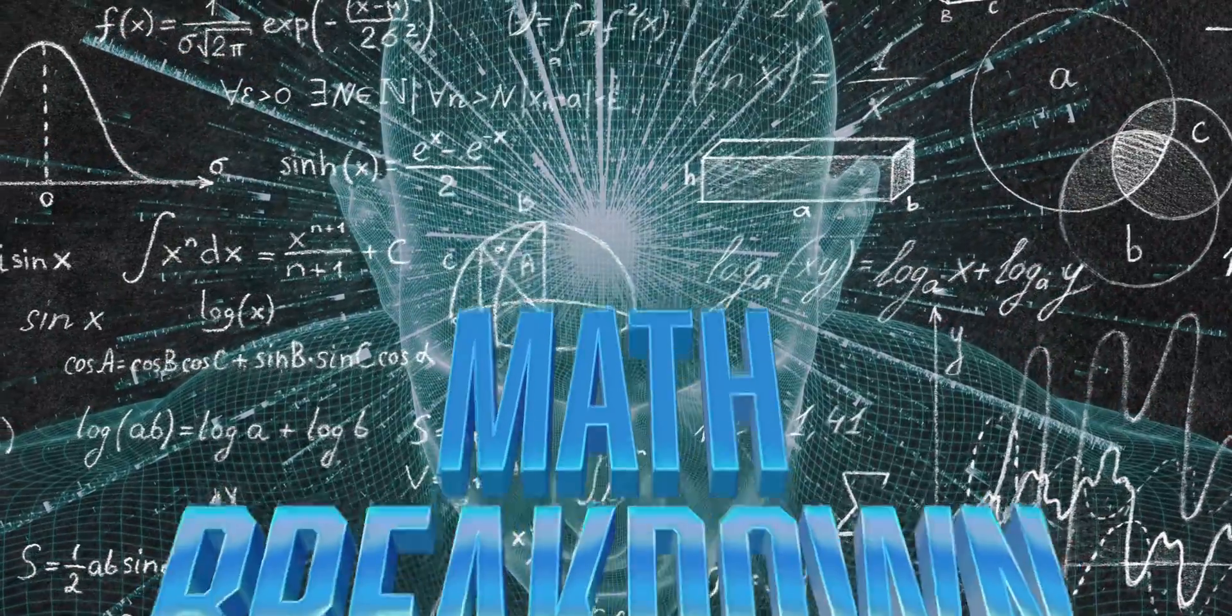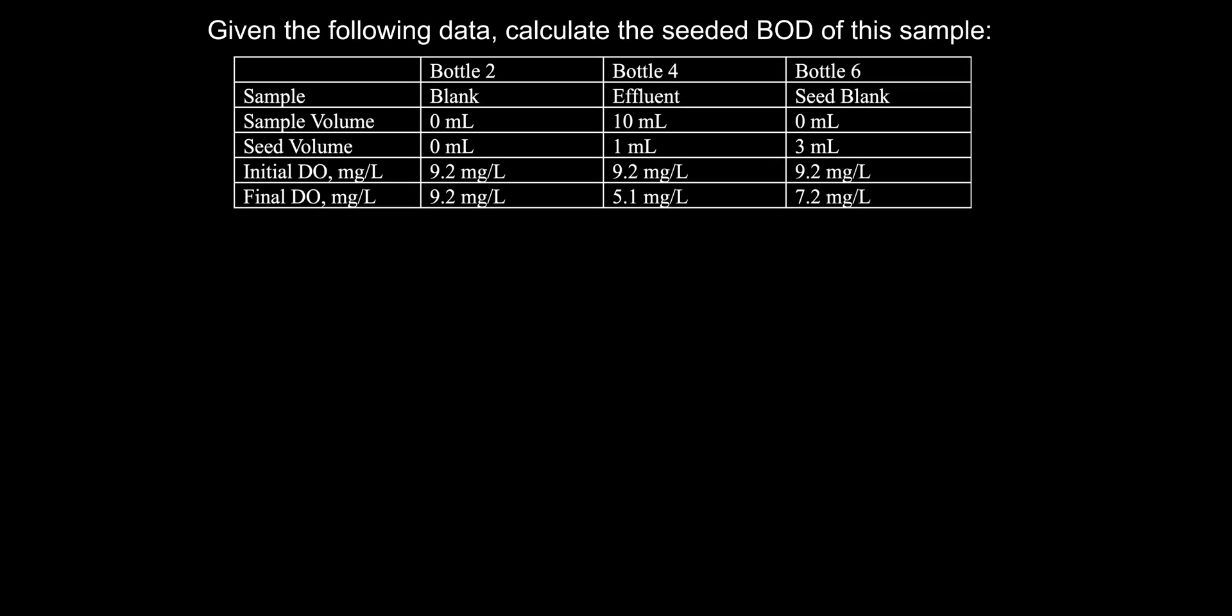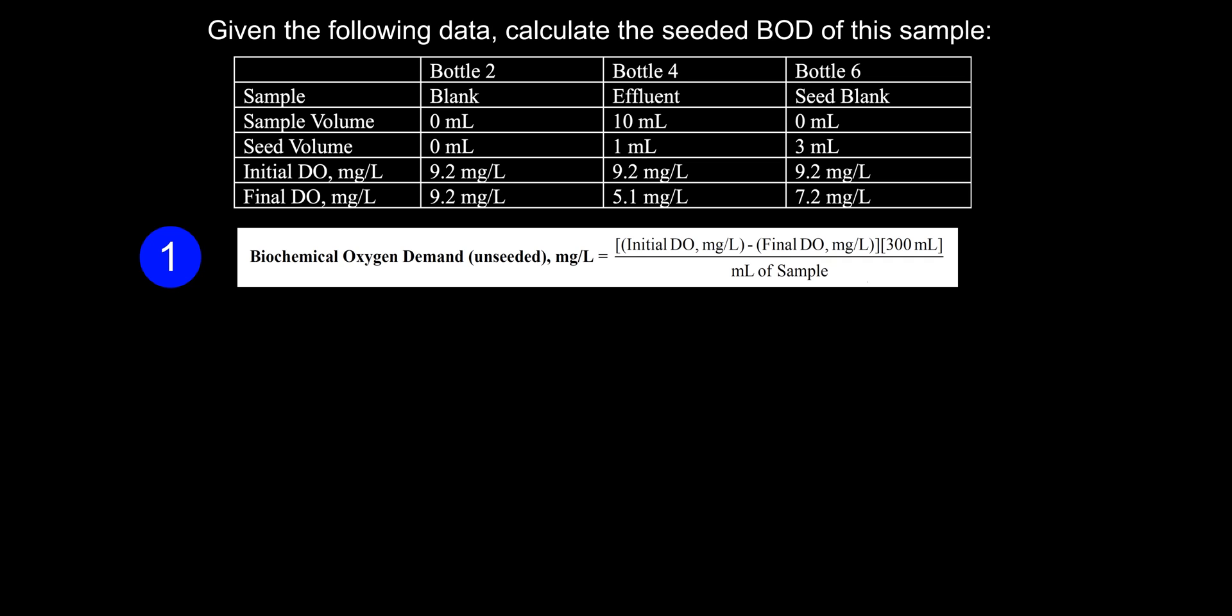Let's big brain this and break down the math. This question has three parts to it. In order to find the BOD value of the effluent sample, which contains seed, we must first find the BOD value of the seed itself. For the first part, we will be using the unseeded BOD equation, which is given to us. Now, I don't want anyone to get confused about why this formula says unseeded, but we're using it on the seed blank sample. This is because while the seed blank contains actual seed, there is no additional seed being added to it, unlike with the effluent sample. Let's plug our numbers from the chart into the equation. We first subtract the initial DO, 9.2, from the final DO, 7.2. This equals 2. Then multiply it by 300, which equals 600. And finally, divide that by 3, giving us an answer of 200 milligrams per liter. This number is the BOD value of the seed being used.